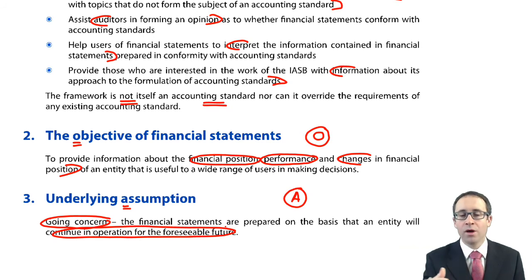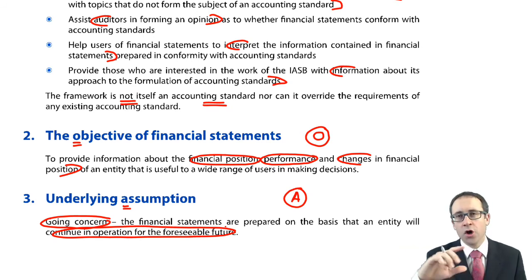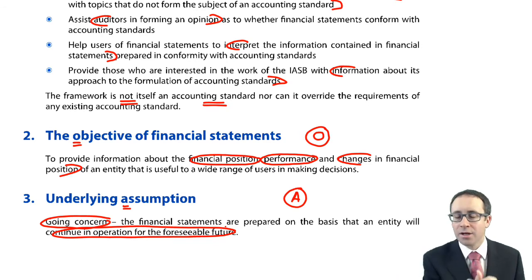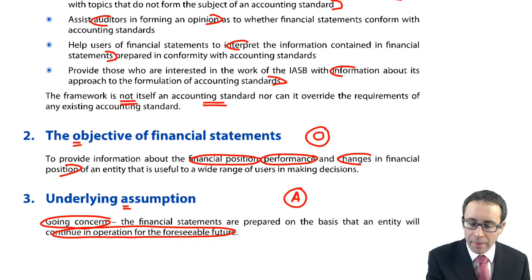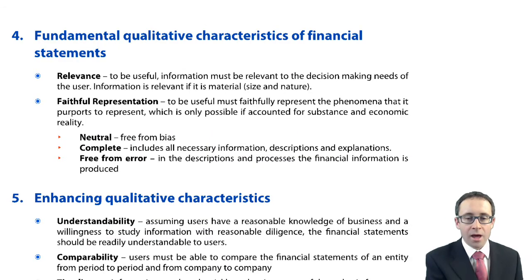So we have R — the role; O — the objective; A — the assumption. We will play around with all the letters to go through and create the mnemonic at the end. Then we go on to look at the qualitative characteristics.